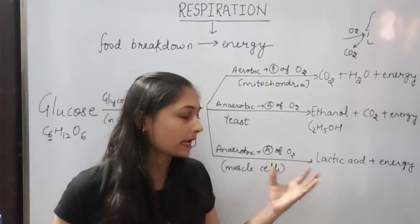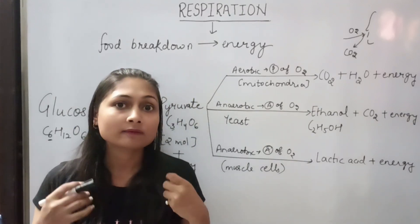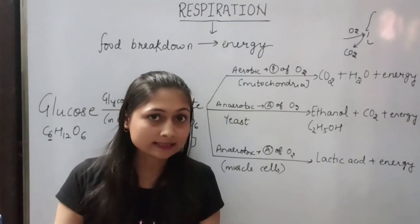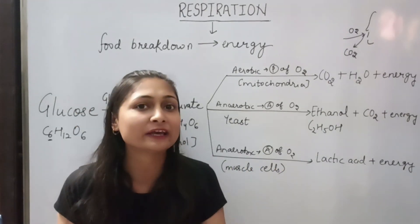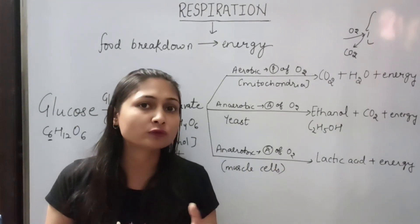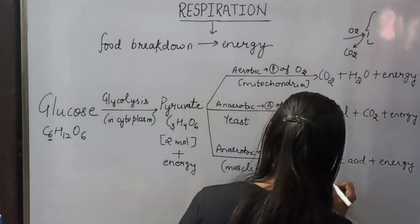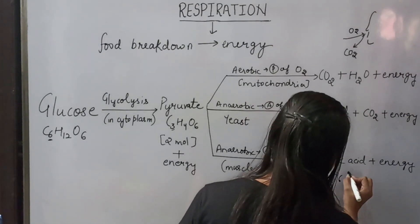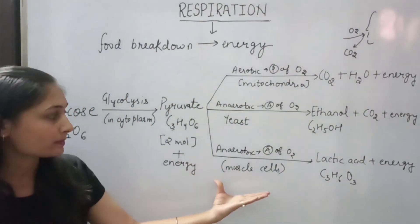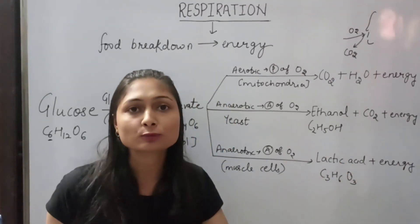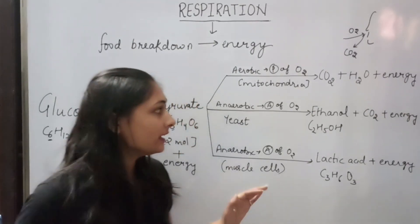After that, we will feel cramps, and the solution to these cramps is to take a hot water bath. What will happen? The blood flow will increase, which will increase the oxygen supply to the area, and the anaerobic respiration will revert back to aerobic respiration. Lactic acid's formula is C3H6O3, which is again a 3-carbon molecule. Lactic acid is the cause of our muscle cramps.